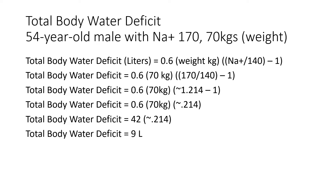Let's walk through how to calculate the free water deficit for a 54-year-old male with a sodium of 170 who weighs 70 kilograms. The total body water deficit in liters equals 0.6 — an arbitrary number we use for males — times the weight in kilograms, times the total sodium over 140 (the average sodium), minus 1.